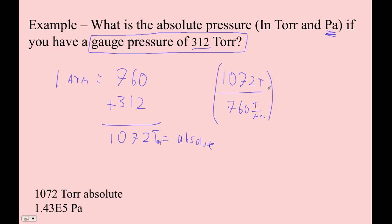And then, what do we do? We multiply that. We want to turn into Pascal, so that's 1.013 times 10 to the fifth. So this is how many atmospheres it is, multiplied by, this is Pascals per atmosphere.